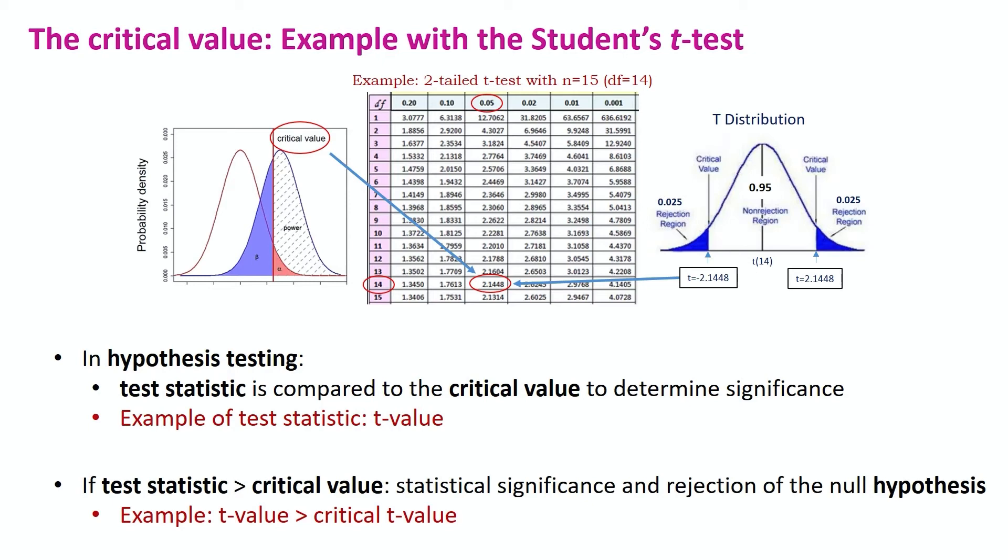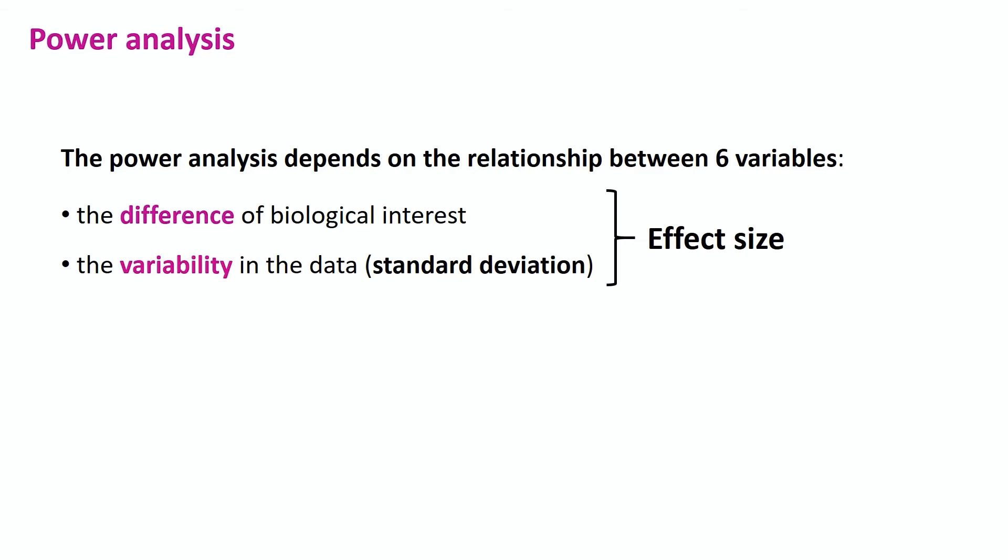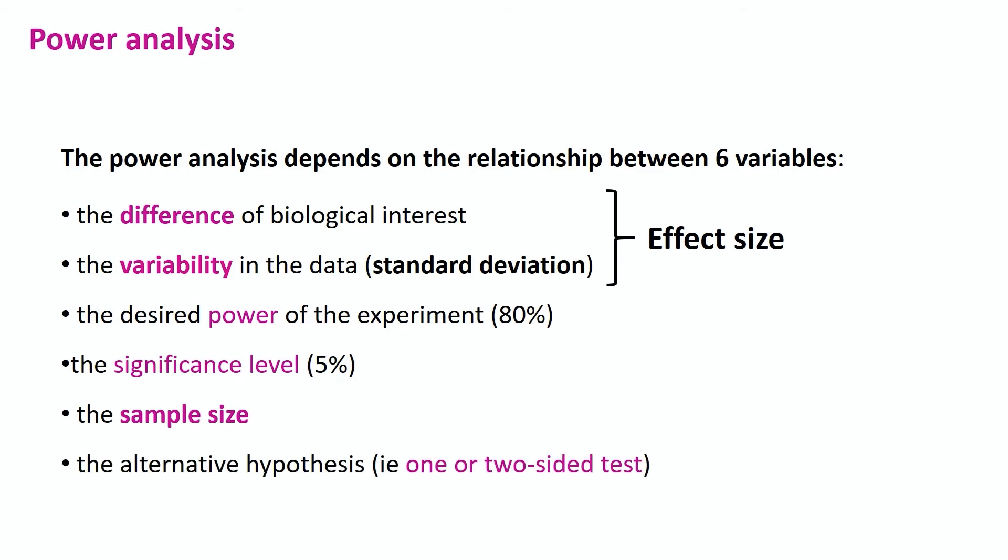Now, a power analysis is really about the relationship between six variables. The difference of biological interest, the variability of the data, both of which together will give us the effect size, the desired power, the significance level, the sample size, and the alternative hypothesis.